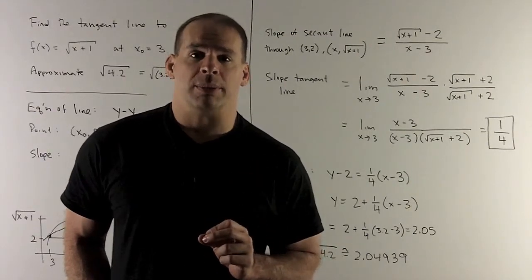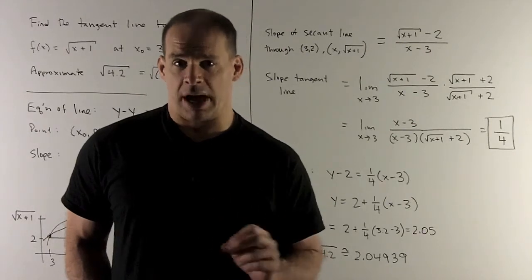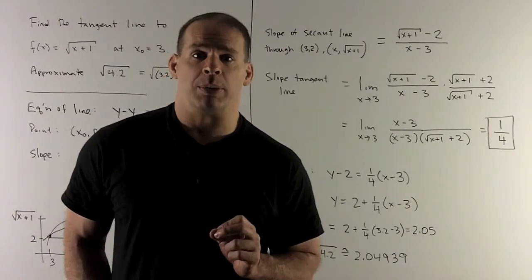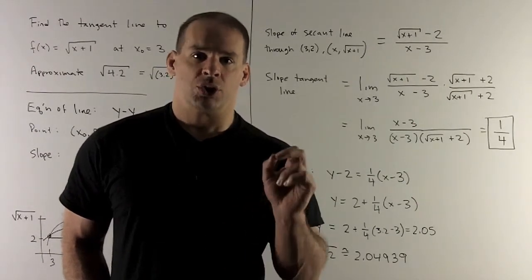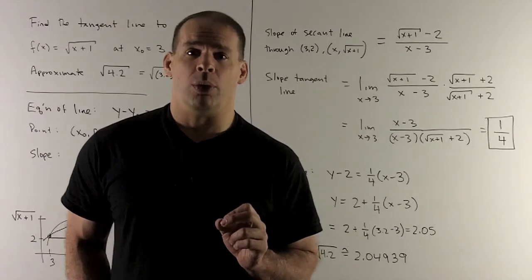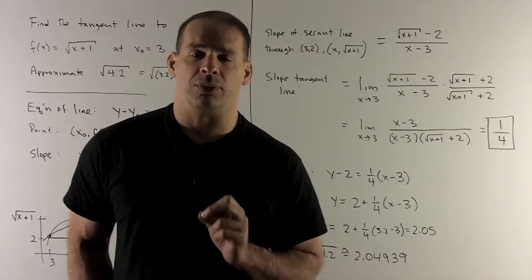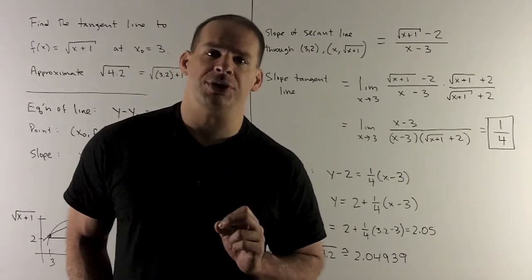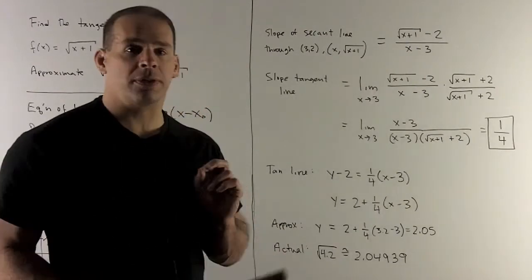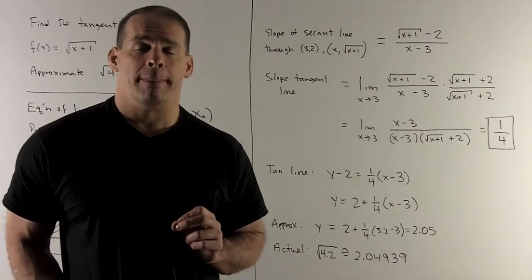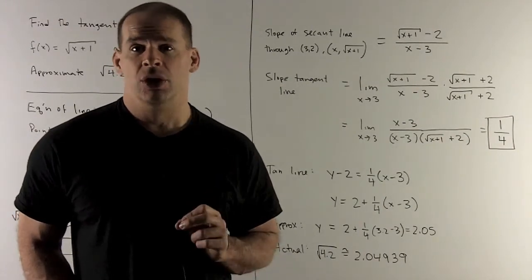Now, I want to approximate 4.2, how to figure out how to write that as a function on top of 3 using our √(x+1). What would be our x if we want to use 4.2? We have to put in 3.2. So I'll put 3.2 into my tangent line. That's going to give me y = 2 + (1/4)(3.2 - 3), or 2 + (1/4)(0.2), and that's going to give me 2.05.